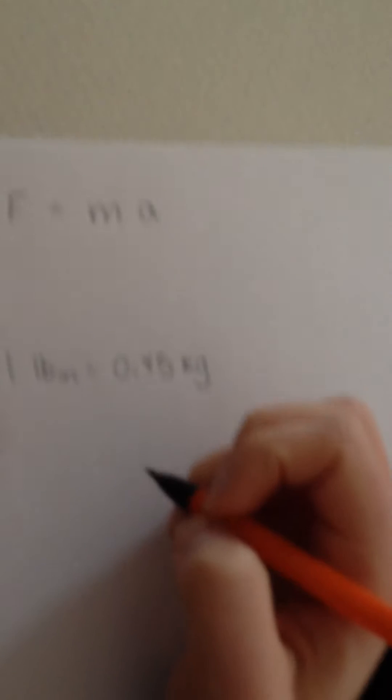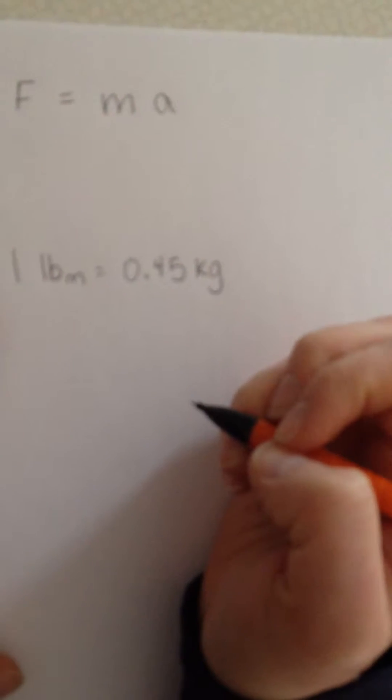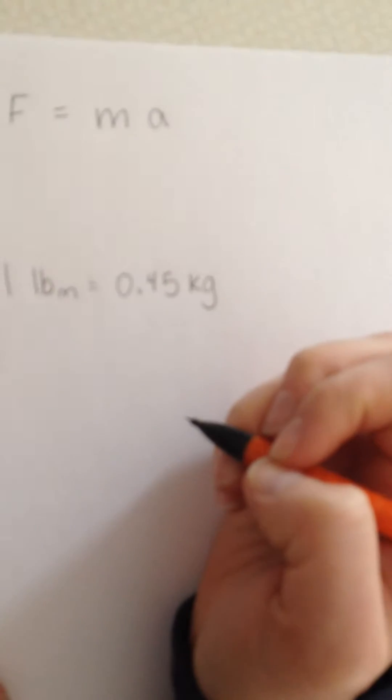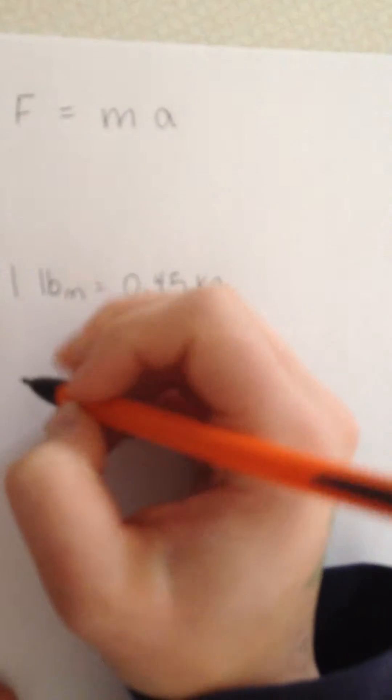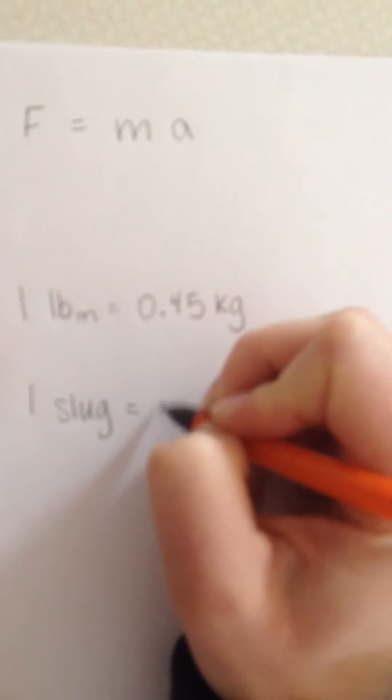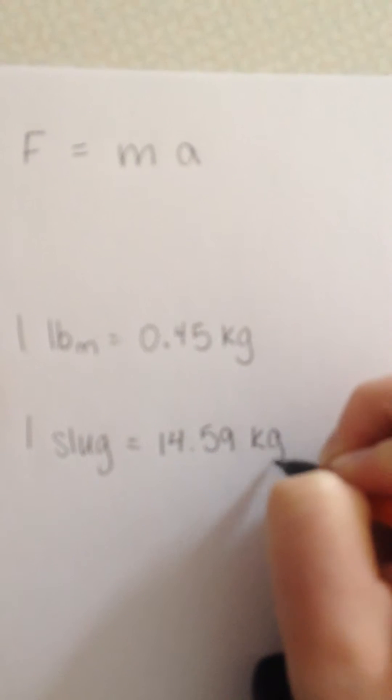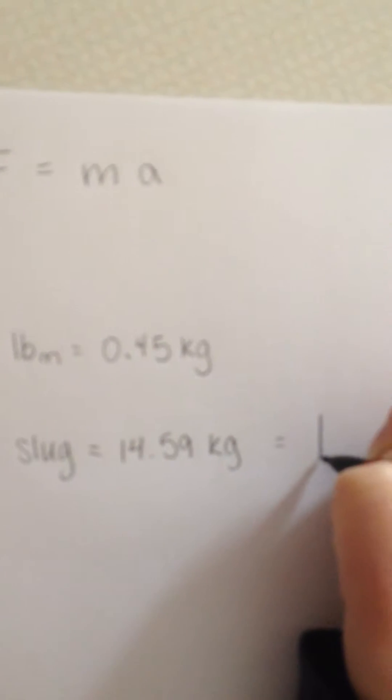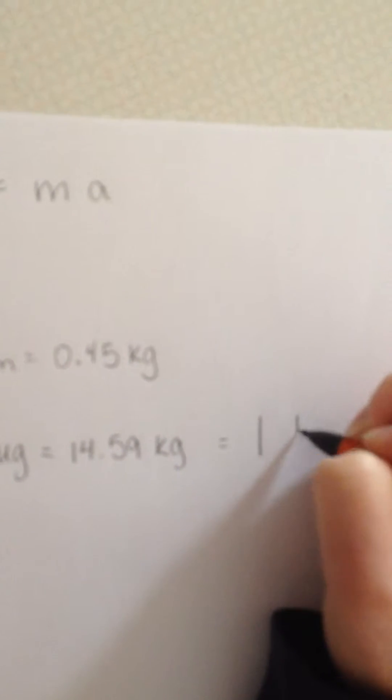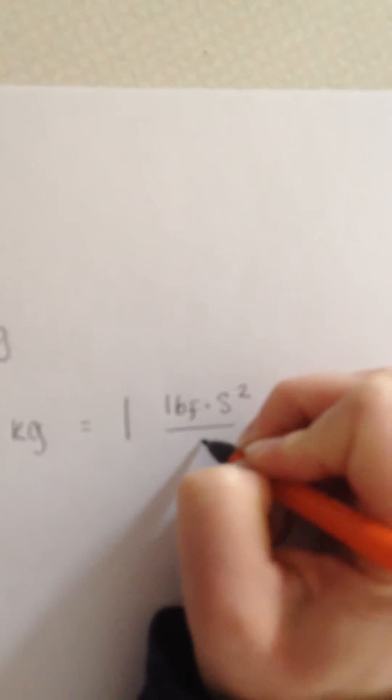The second unit of mass is the slug. A slug is the amount of mass that accelerates by one foot per second when one pound force is applied. One slug is equivalent to 14.59 kilograms, or equivalently, one pound force times second squared over foot.